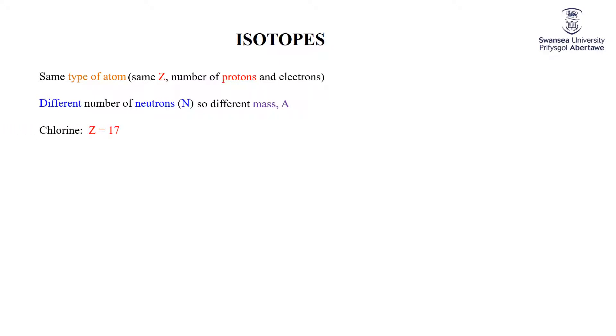For example, chlorine. You can look at the periodic table and you see that chlorine has an atomic number of 17, which means that there are 17 protons in every single chlorine atom. But there are two stable isotopes of chlorine. One of those has 18 neutrons. One of those has 20 neutrons.